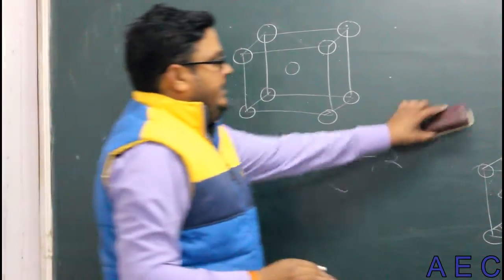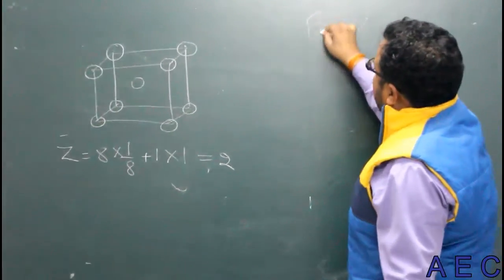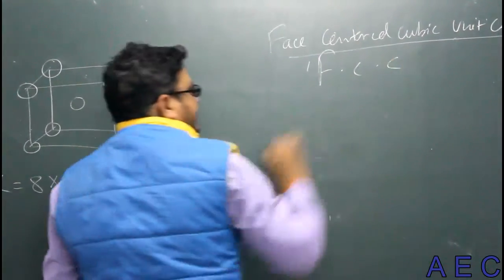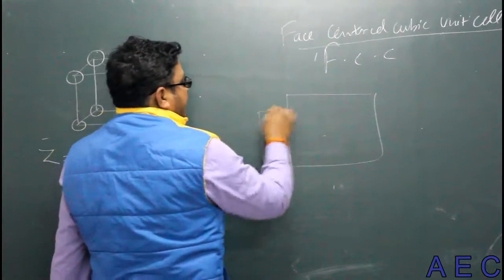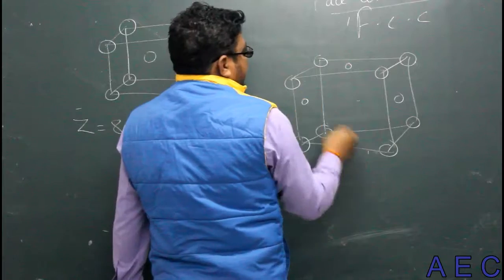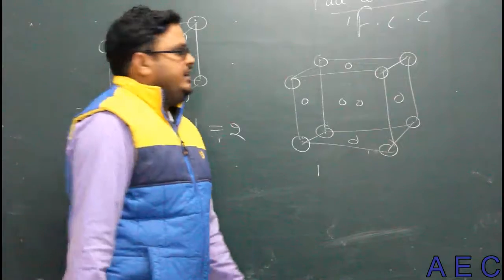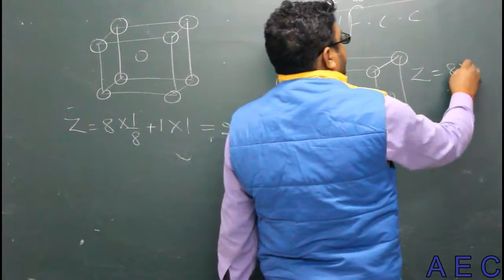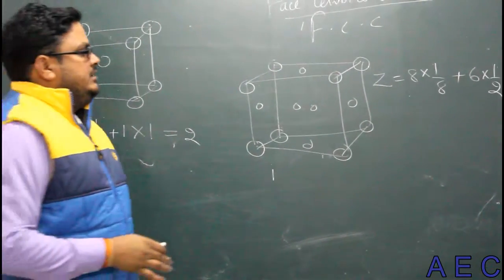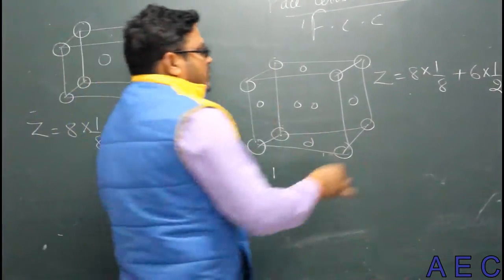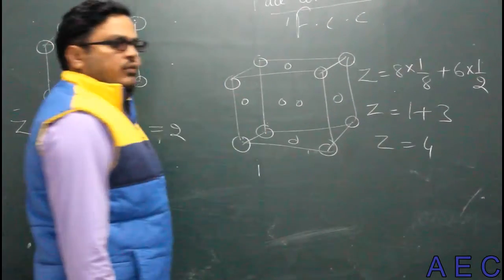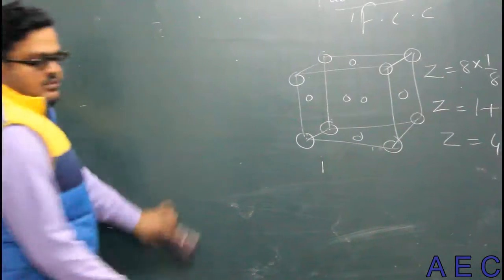Face-centered cubic unit cell, short form FCC — in this unit cell, atoms are present on corners as well as on the face centers of the unit cell. Z equal to 8 corners into 1/8 plus 6 faces into 1/2. The contribution on a face is 1/2. This gives 1 plus 3, so the total Z value is 4. Therefore, face-centered cubic unit cell has 4 atoms per unit cell.